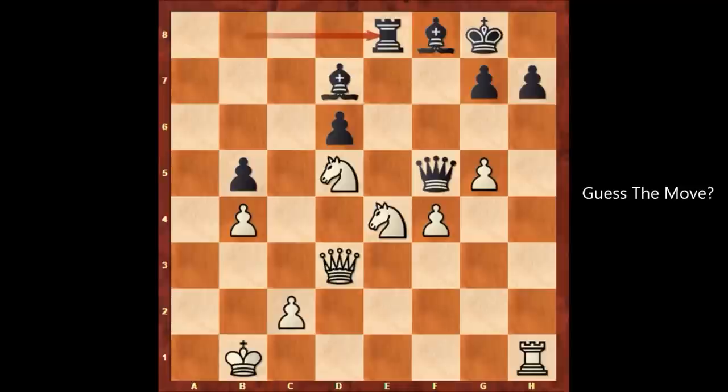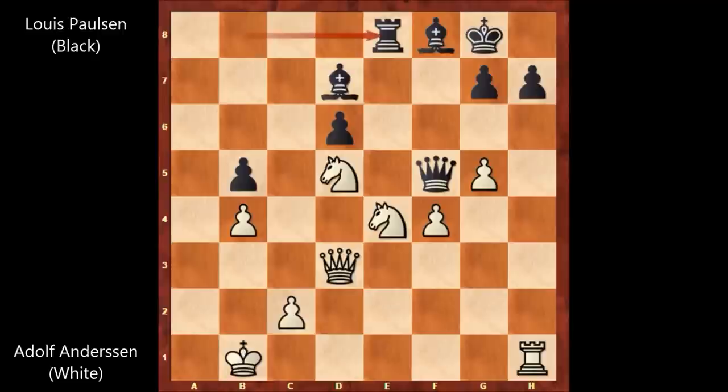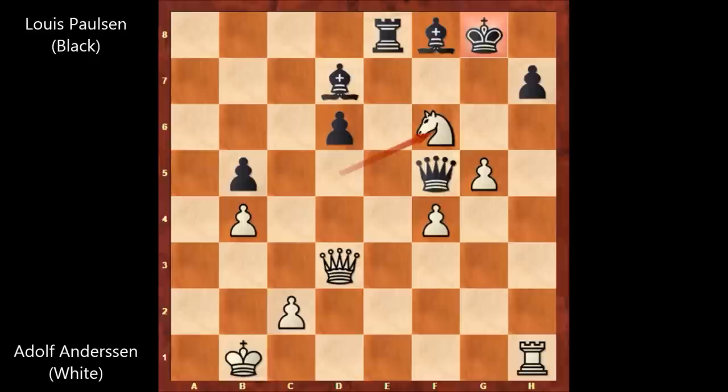What would you do in this position? Can you see the killer move? Adolf Anderson sacrificed his knight — knight from e to f6 by Anderson, forking the king and the rook. Paulsen captured the knight, but then knight takes on f6 by Anderson, again forking the king and the rook. We have king to f7 — if king to h8, then black is getting checkmated, there is no defense.